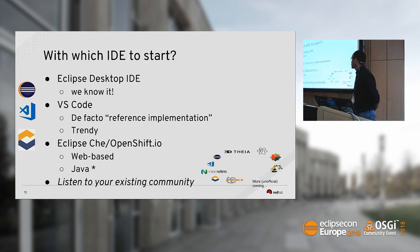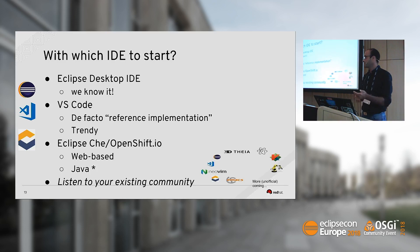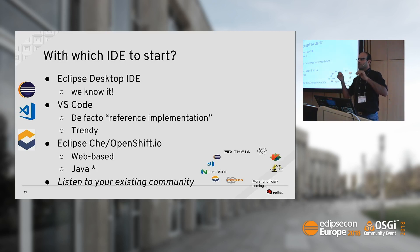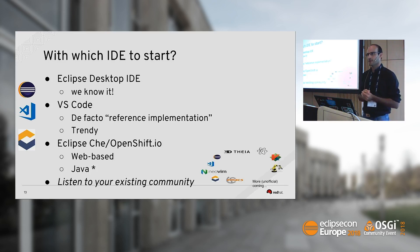We started with the Eclipse desktop IDE, mainly because we are Java and Eclipse plugin developers — it's really easy, we know how this model works, and there is a clean API. We also provided a client for VS Code. The language server protocol came from the VS Code community first, so VS Code is kind of the de facto reference implementation. When your language server is working correctly inside VS Code, you are almost sure you are implementing the protocol correctly. Also, it is one of the trendiest editors.